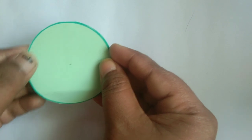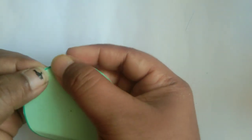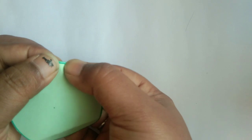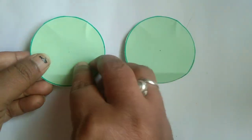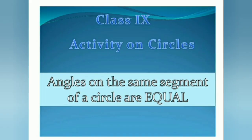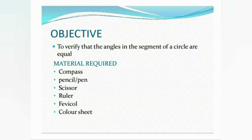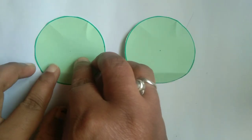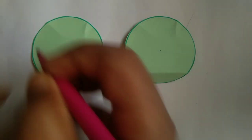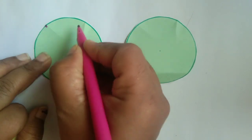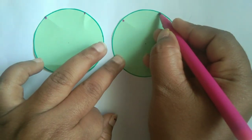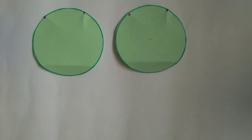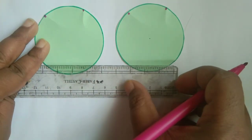Now I will mark two more points on this major segment, like this. The same thing should be done in the other circle. Take out a scale to join the points.